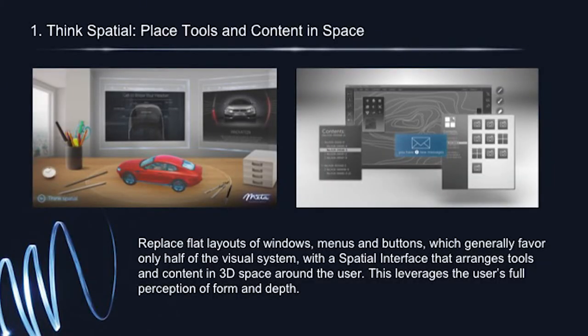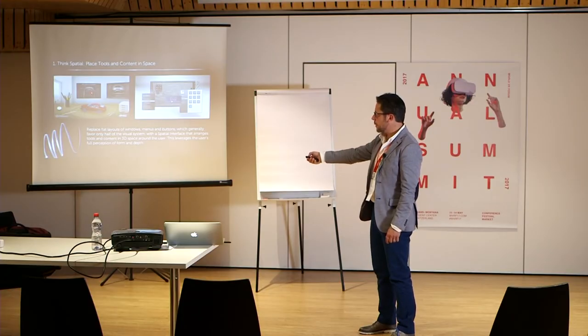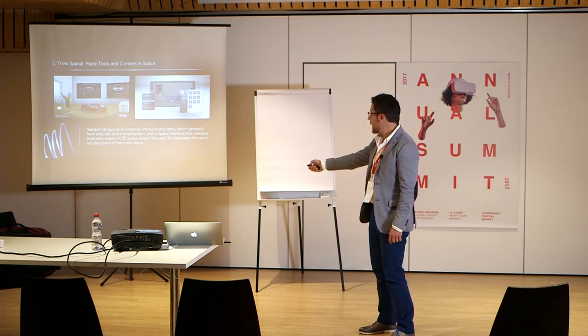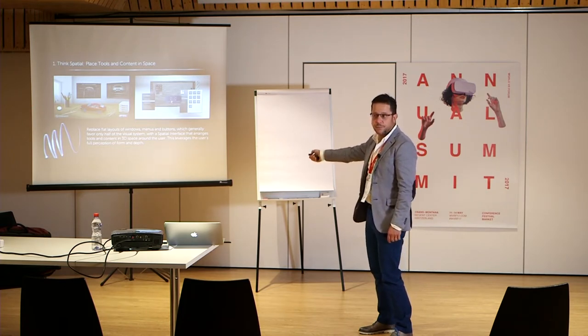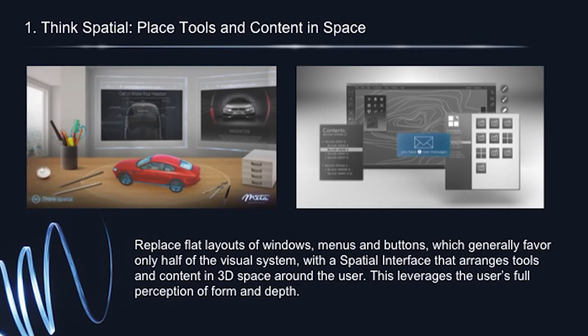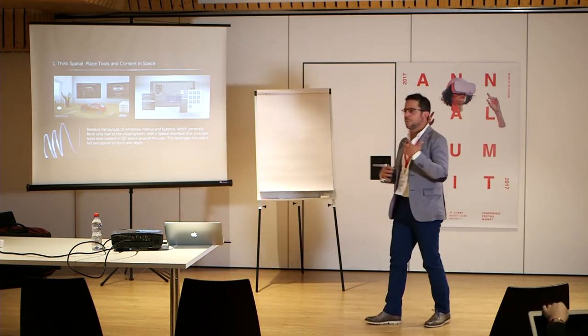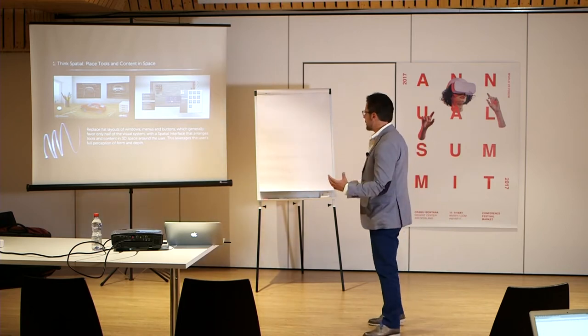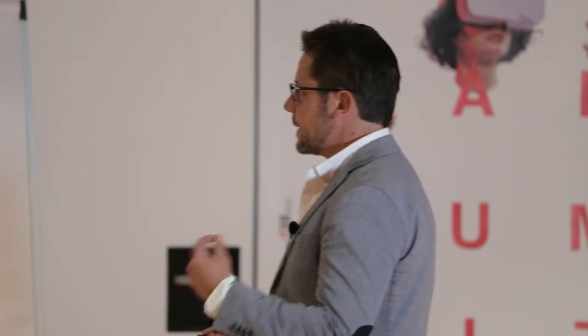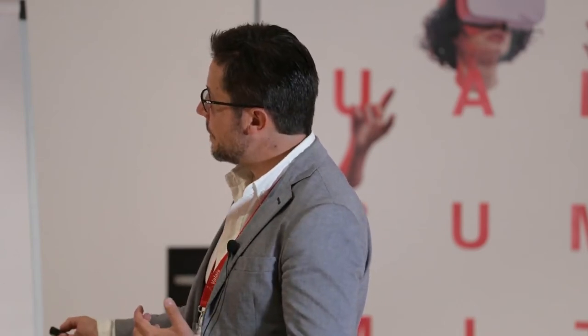Principle number one: Think Spatial — place tools and content in space. On the left is what we want the interface to look like; on the right is the 'don't.' This principle is to replace flat layouts — windows, menus, and buttons that favor only one half of the visual system — with a spatial interface that arranges tools and content in the space around the user, leveraging the user's full perception of form and depth.